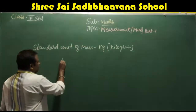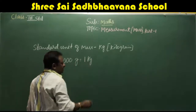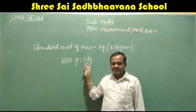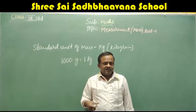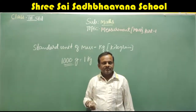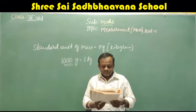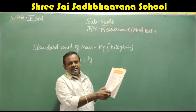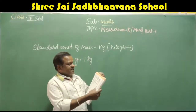You have to learn that 1000 grams is equal to 1 kg. How many grams are there in 1 kg? 1000 grams. So when you purchase 1 kg onions, 1 kg apples, or 1 kg oranges, there are 1000 grams in that 1 kg. These are the measuring instruments used for measuring the weight of an object.